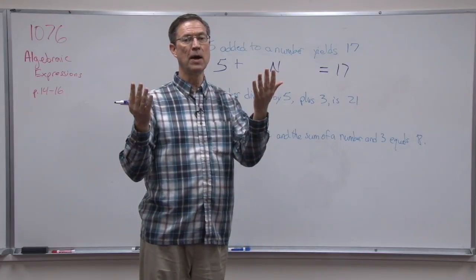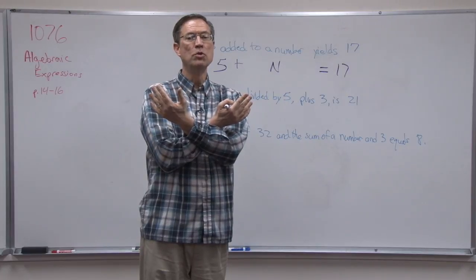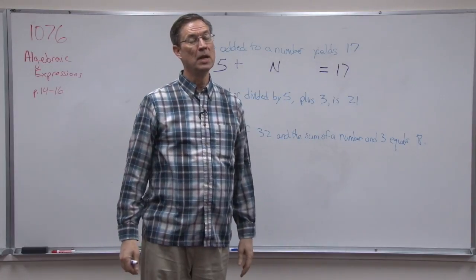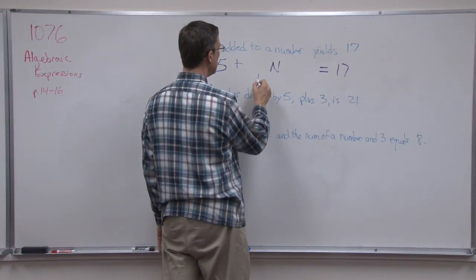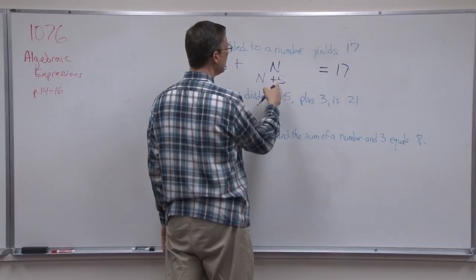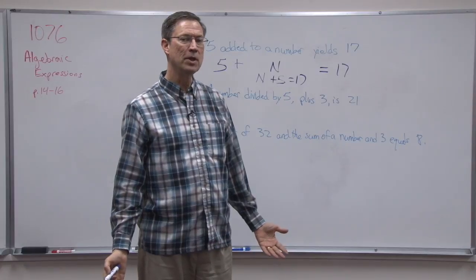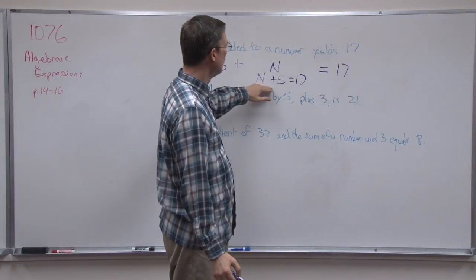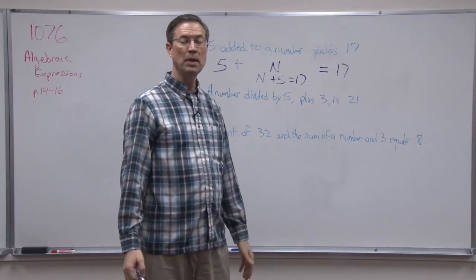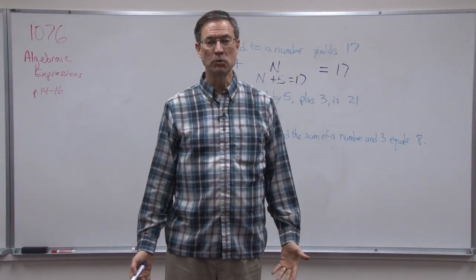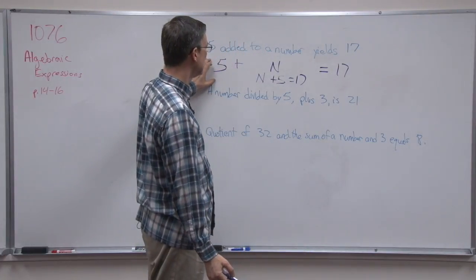So 5 added to a number equals 17. Let me tell you a little secret here: you know that 3 plus 5 is the same thing as 5 plus 3. We call that the commutative property of addition. So I could write this as a number and then adding 5 to that equals 17, and it's the same thing. Now if we had one that was taking away subtraction, that does make a difference. But here with addition, these are both acceptable answers.